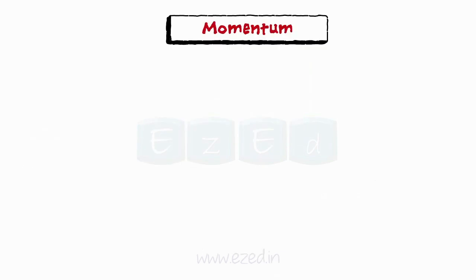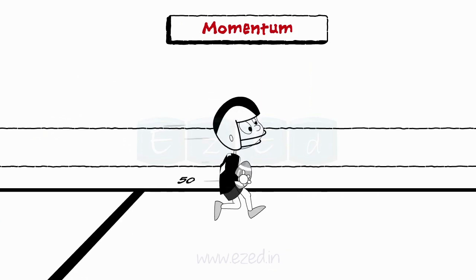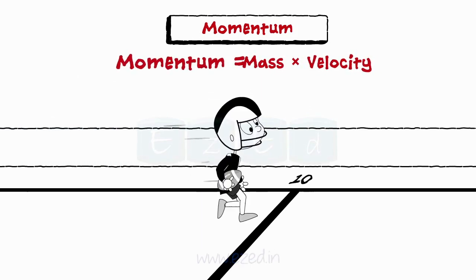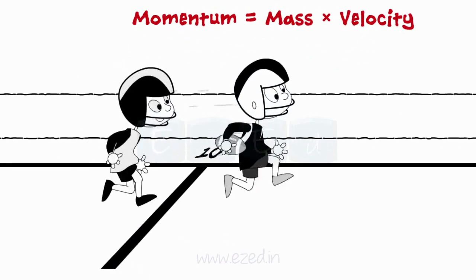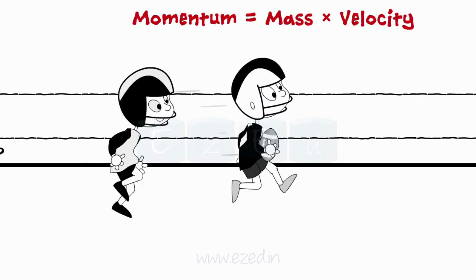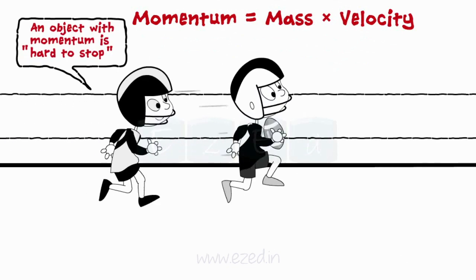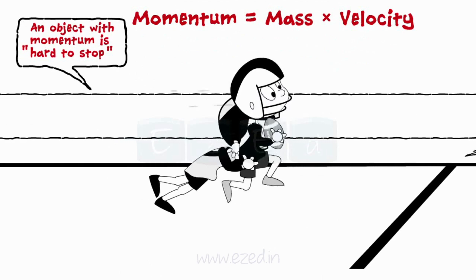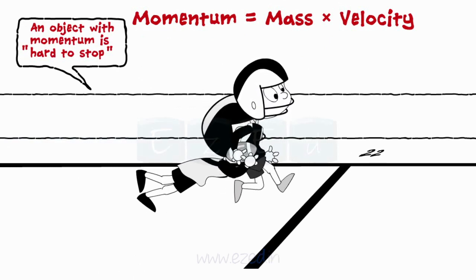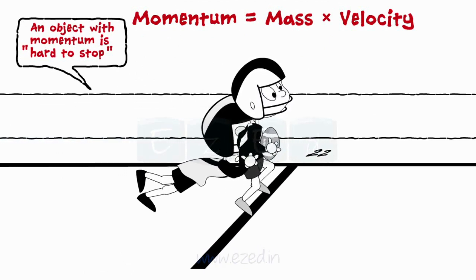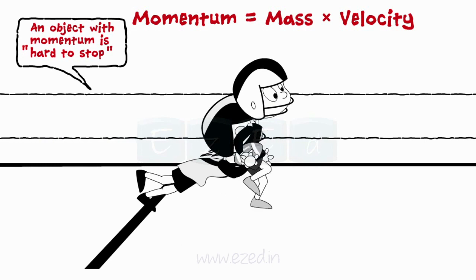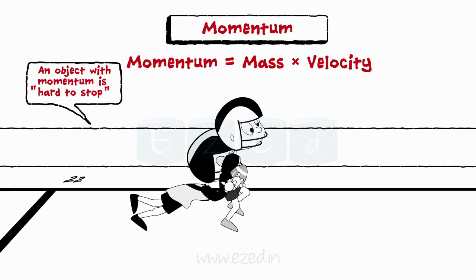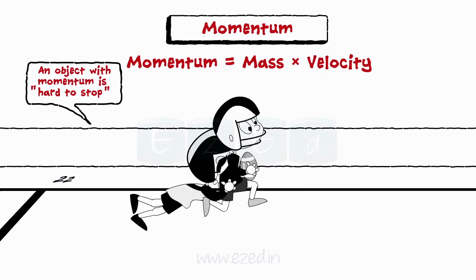Momentum is defined as the measure of the motion of a moving body. The product of mass and velocity is called momentum. A rugby player has great momentum which is hard to stop. To stop that player, force is applied against his momentum by another rugby player, as the force applied for an amount of time results in a change in his momentum.